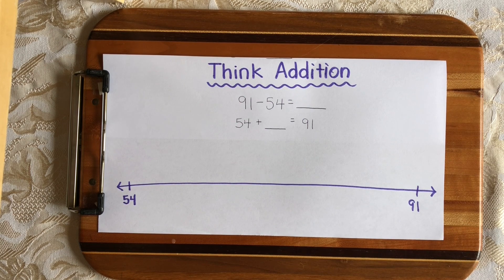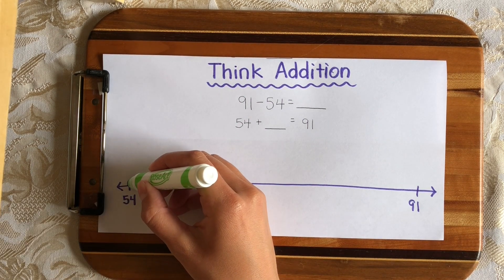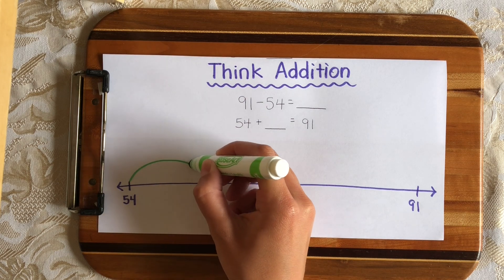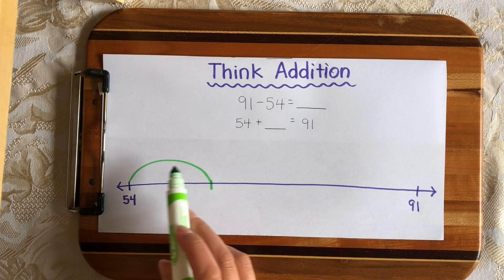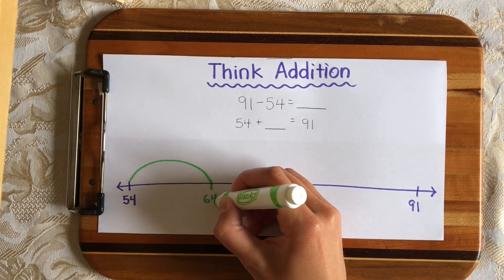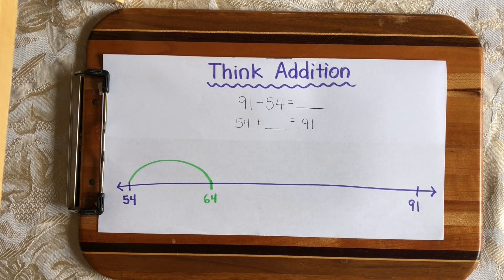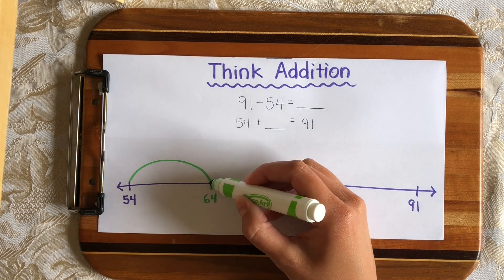Now I need to figure out how many hops of 10s and 1s I need to make to get to 91. So we're going to do one hop at a time and see where we need to stop. So let's start at 54 and we can make a hop of 10 because it's pretty far away from 91. And if we add 10 onto 54 we will get 64. Okay, so I'm not there yet so I need to keep going.